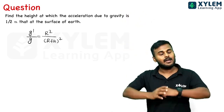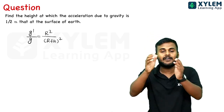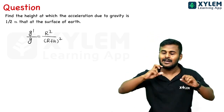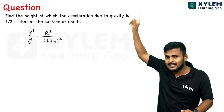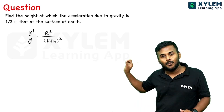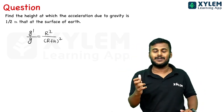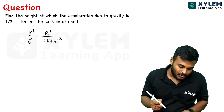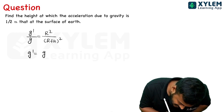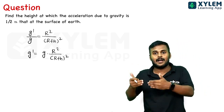When the height is very much less than the radius of Earth, we use the approximation. The acceleration due to gravity equation we have to use is g' equal to g into R square divided by R plus H whole square.